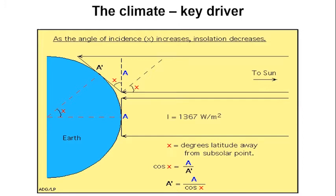Near the poles, the angle of incidence is bigger, so the same amount of energy covers a greater area compared to the equator. Hence, we have cooler climates towards the poles, whilst at the tropics, we have a warmer climate because all of the energy is concentrated into a smaller area — the angle of incidence is smaller towards the poles.